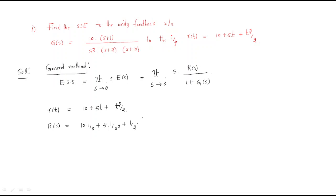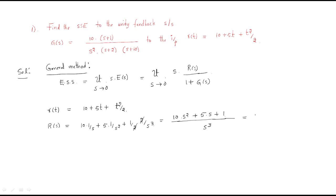After applying the Laplace transform and taking s³ as the common denominator, the 2 cancels and we get R(s) = (10s² + 5s + 1) / s³. This is our R(s).